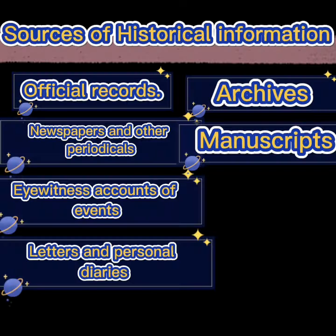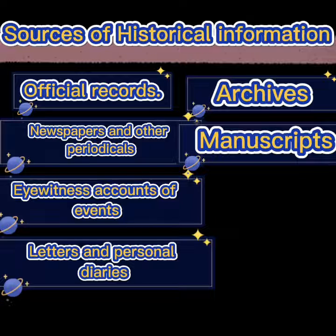The data gathered in historical research comes from a wide variety of sources. Among the more commonly used are the following: official records such as laws, deeds, annual reports of organizations, charters, and so on; newspapers and other periodicals; eyewitness accounts of events; archives, manuscripts, letters, and personal diaries.